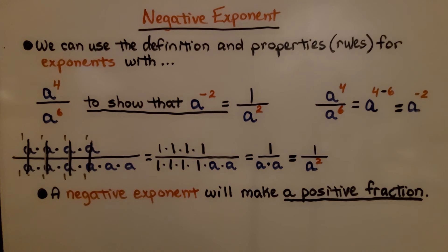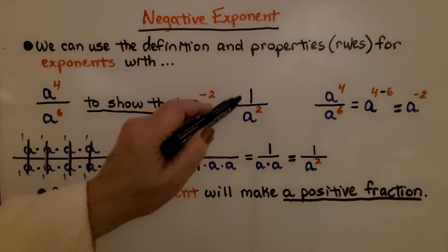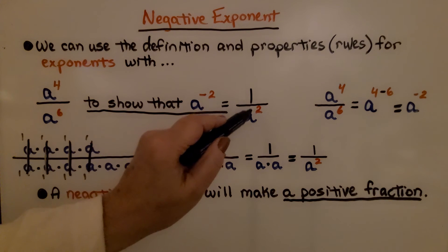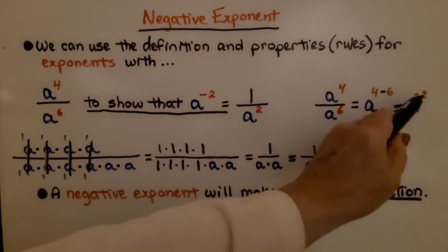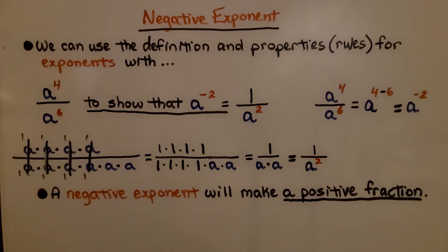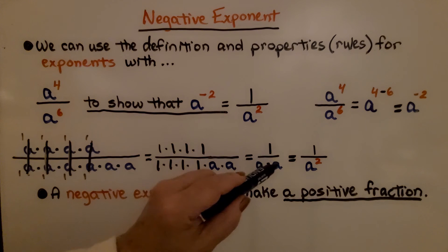Now let's talk negative exponents. We can use the definition and properties of exponents with a to the fourth power over a to the sixth power to show that a to the negative second power equals 1 over a to the second power. From the quotient rule, 4 minus 6 is negative 2 — that's how we get that negative exponent. If we wrote these out, we'd have four factors of a over six factors of a; canceling gives 1 over a times a, which is 1 over a squared. A negative exponent makes a positive fraction.